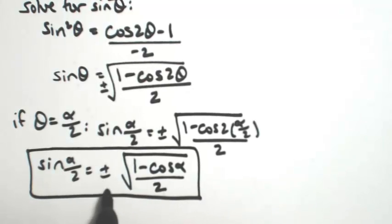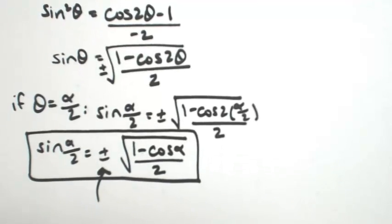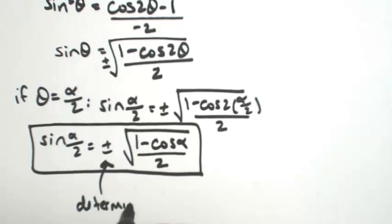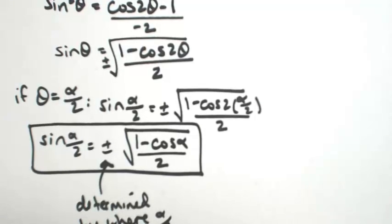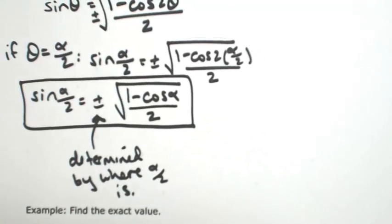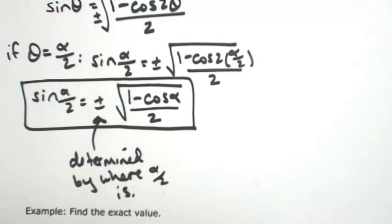This plus or minus is determined by wherever the angle happens to be — specifically, where alpha over 2 is. We'll do a couple of examples so you can see what that means.